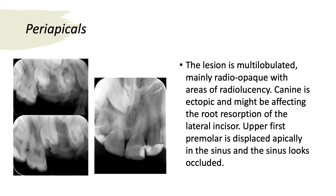Looking at the periapical x-rays — because we saw the lesion on the panoramic, we wanted a closer look — the periapicals confirmed a multi-lobulated, mainly radiopaque lesion with areas of radiolucency. They also showed that the canine is ectopic and may be affecting the roots of the central and lateral incisors on the upper right side, and that the upper first premolar is displaced high into the sinus, which appears occluded.